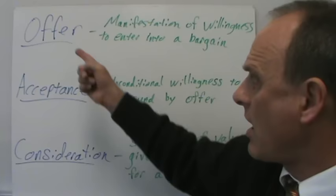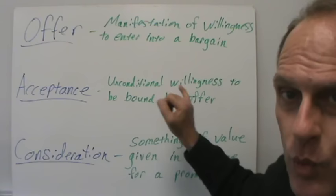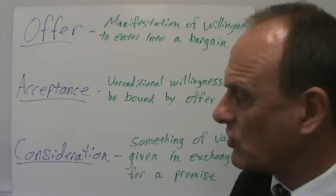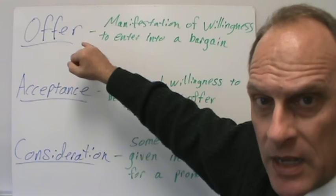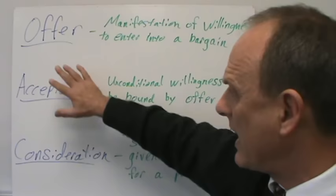Once you have an offer, the next element is acceptance. Under classical common law, acceptance has to be an unconditional willingness to be bound by the offer. In some places we even see the term mirror image — whatever the acceptance is, it has to be a mirror image of the offer exactly. For example, the offer says 'I'll sell you my car for a thousand,' and the acceptance is 'I will buy your car for a thousand dollars.' That's mirror image acceptance.